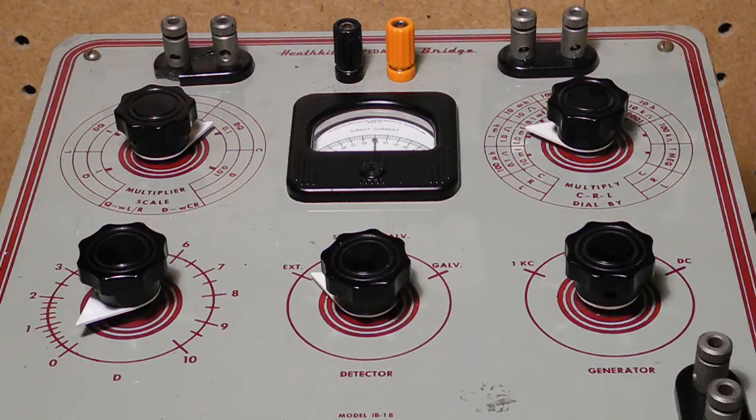Like most Heathkit products, it was offered as a kit that the user assembled. Calibration did not require any instruments. It came with a 1000 ohm 1% tolerance calibrating resistor.